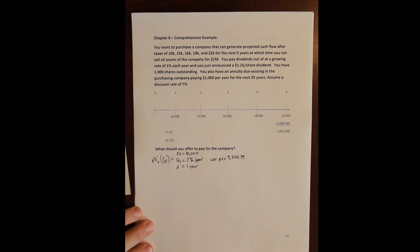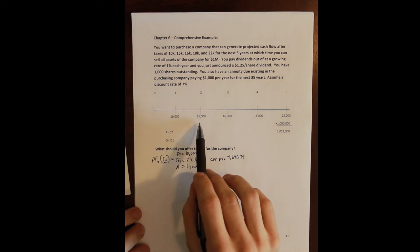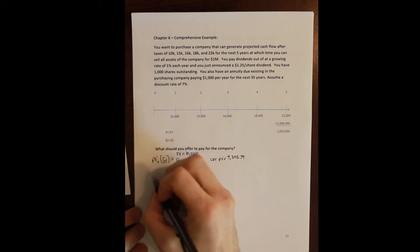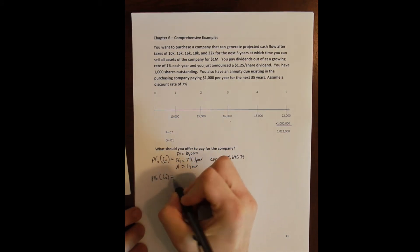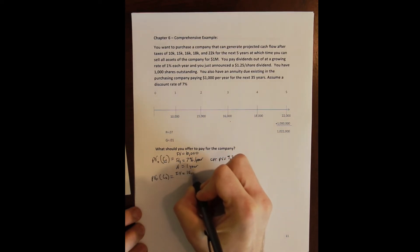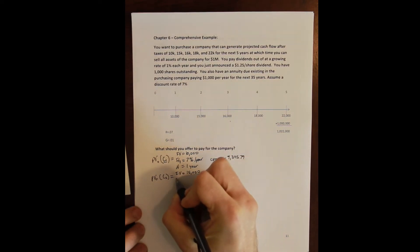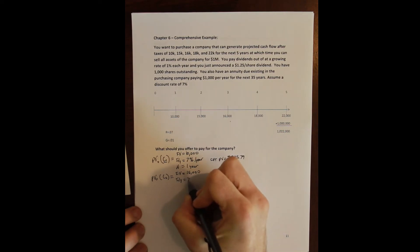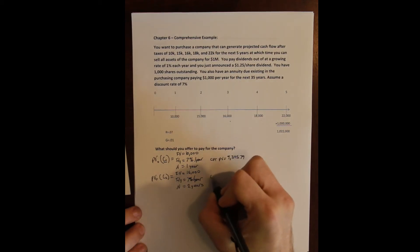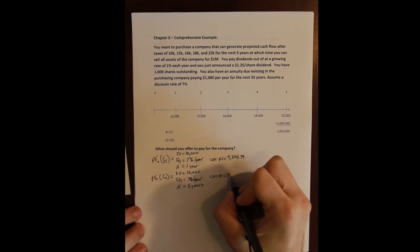And as tedious as it's going to be, we have to do that for all the remaining five cash flows. So the present value today of cash flow two, well cash flow two has a future value of $15,000. It has a rate of 7% per year, and it occurs two years in the future. And we compute the present value here and get $13,101.60.